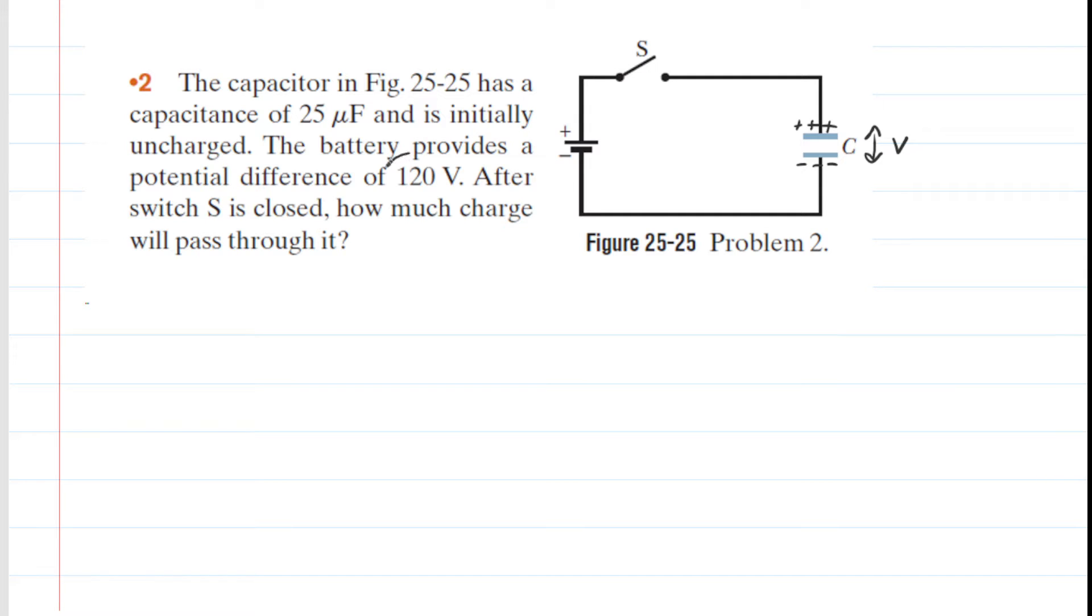So in other words, the question notes that the battery provides a potential difference of 120 volts. Once these plates are fully charged, then the potential difference between them will also be 120 volts. So we can easily calculate the amount of charge by considering the relationship between charge, capacitance, and potential difference.